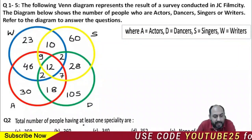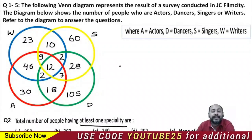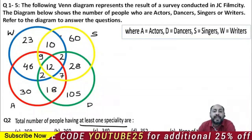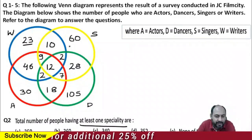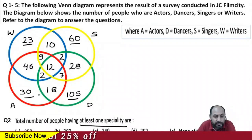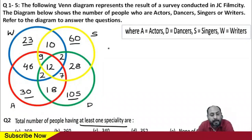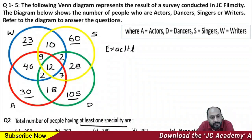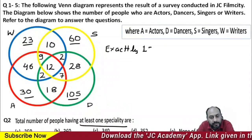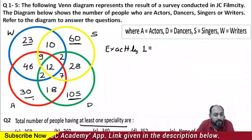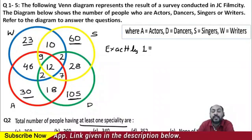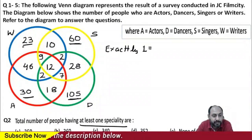The second question asks for the total number of people having at least one speciality. At least one means we count everyone. If it said exactly one, we'd add only those four outer-only values. We need to add up all values across all circles. Exactly one speciality gives: 105 plus 60 plus 30 plus 23 equals 218.